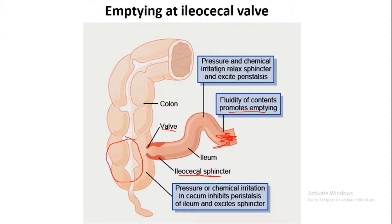Pressure and chemical irritation relax the sphincter and excite peristalsis. Whatever food particles or fluid are present in the terminal ileum exert pressure and chemical irritation, which relaxes the ileocecal sphincter and excites peristalsis. The peristaltic wave moves towards the terminal ileum and pushes food towards the cecum as the ileocecal valve opens.